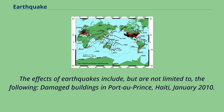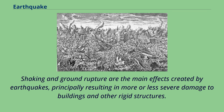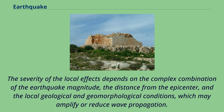The effects of earthquakes include shaking and ground rupture, principally resulting in more or less severe damage to buildings and other rigid structures. The severity of the local effects depends on the complex combination of the earthquake magnitude, the distance from the epicenter, and the local geological and geomorphological conditions, which may amplify or reduce wave propagation. The ground shaking is measured by ground acceleration.